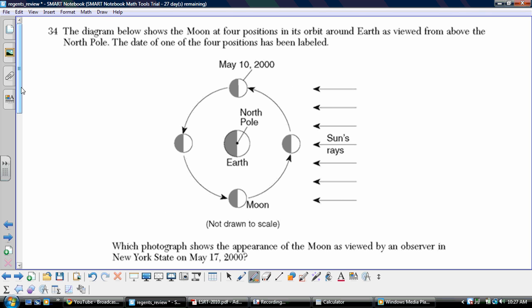Number 34, we've got a moon phase diagram here, and we've got it at four various positions. We're looking down at the North Pole on a date. May 10th is shown to us here. Which photograph shows the appearance of the moon as viewed by an observer in New York State on May 17th, 2000? Okay, so we've got the 10th here. We know it's going to take 28 days to go all the way around Earth, approximately 28 days. And so May 17th from May 10th, that's seven days, and that's one quarter of the 28 days it takes to go all the way around. And so we're going to be looking at that position over there to go one quarter to the 17th.